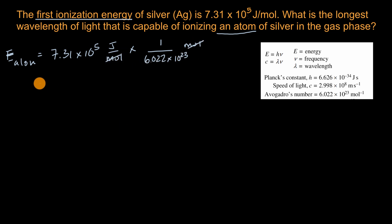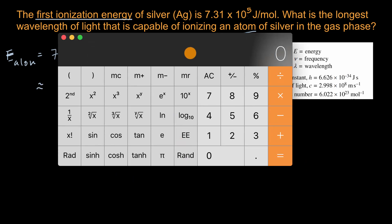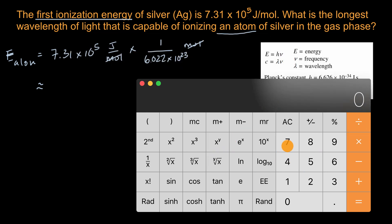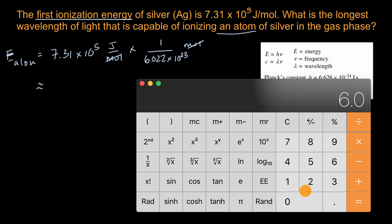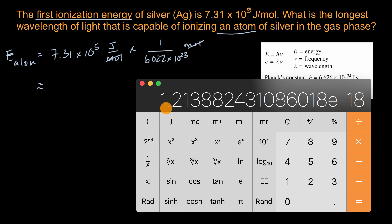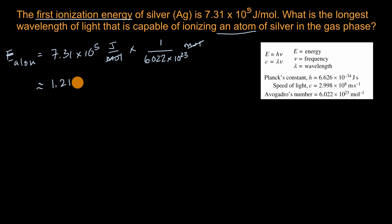We have three significant figures, so: 7.31 times 10 to the fifth divided by 6.022 times 10 to the 23rd is approximately equal to 1.21 times 10 to the negative 18 joules. This is the first ionization energy per atom in joules.